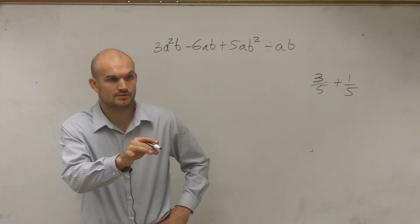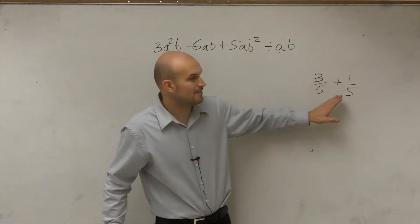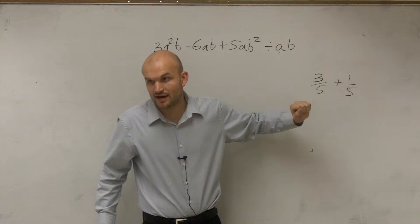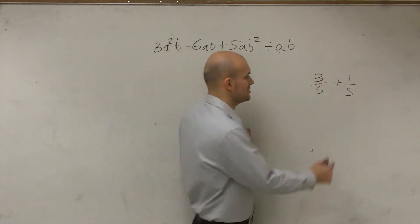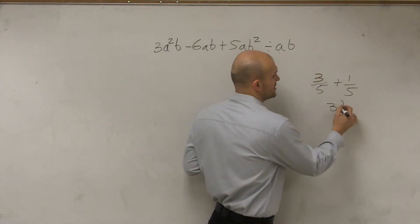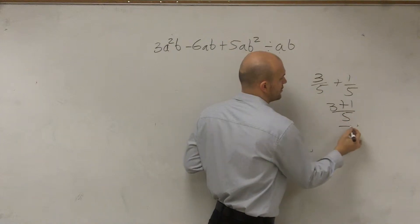So I have 3 divided by 5 plus 1 divided by 5. That can simply be written as 3 plus 1 divided by 5, which is 4 over 5. Everybody follows me with that?